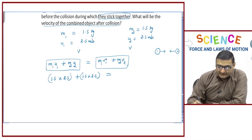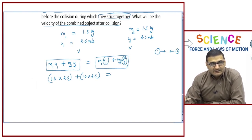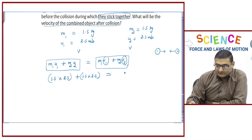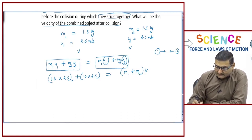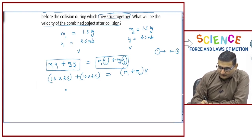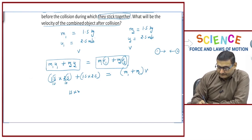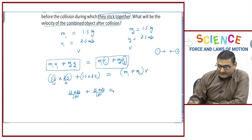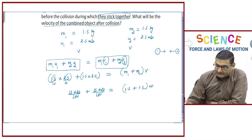Since the objects have combined into one, their final velocity is the same, taken as v. So the right side becomes (m1 + m2) × v. Calculating: (15 × 25)/100 + (15 × 25)/100 = (1.5 + 1.5) × v, which gives us 3v on the right side.